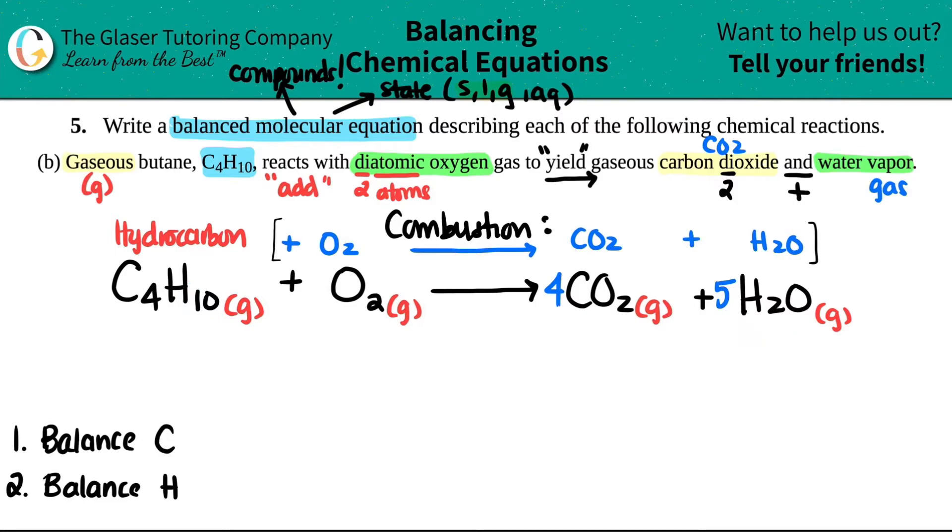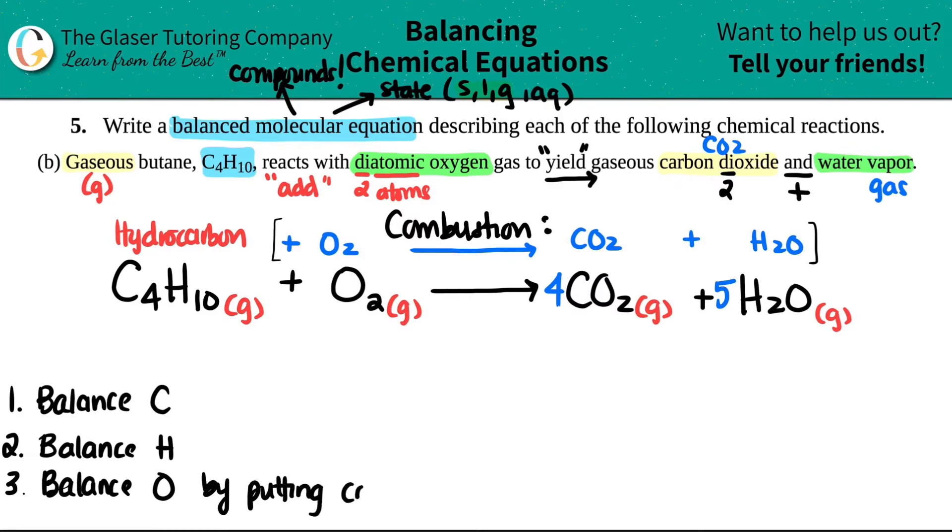The final thing that you're going to do, and maybe I will just scooch this up a little bit. The final thing you're going to do is now you're going to balance oxygen. This is the most important part. You want to save oxygen for last. And you're always going to balance oxygen by putting your coefficient, aka the big number, right? The big number in front of O2. Mainly because you already put coefficients on these compounds that had oxygen. You don't want to change those coefficients. So you're forcing yourself to put a coefficient in front of the O2.